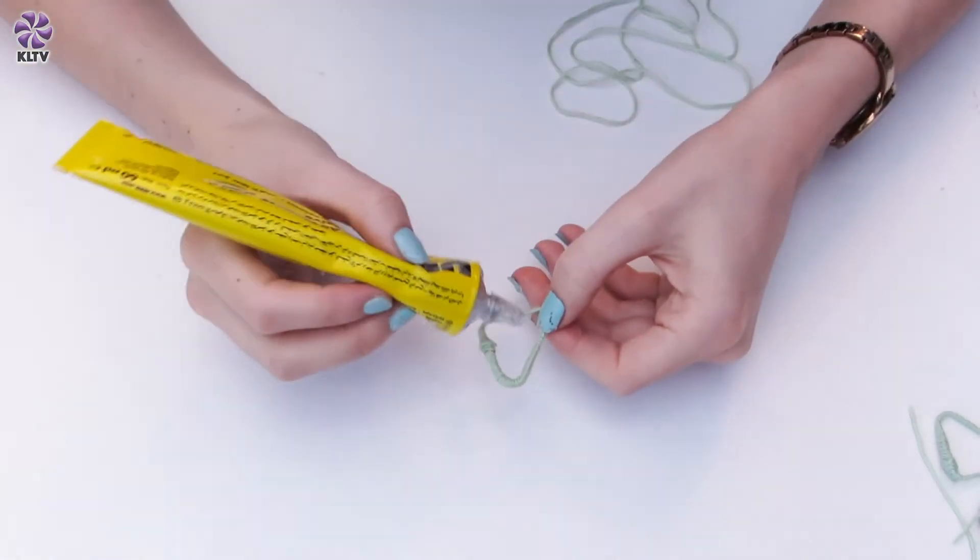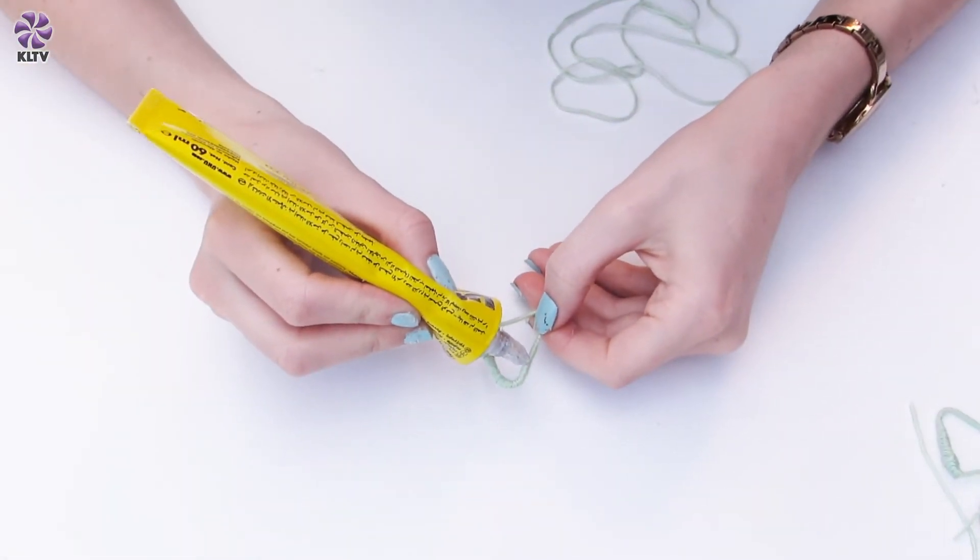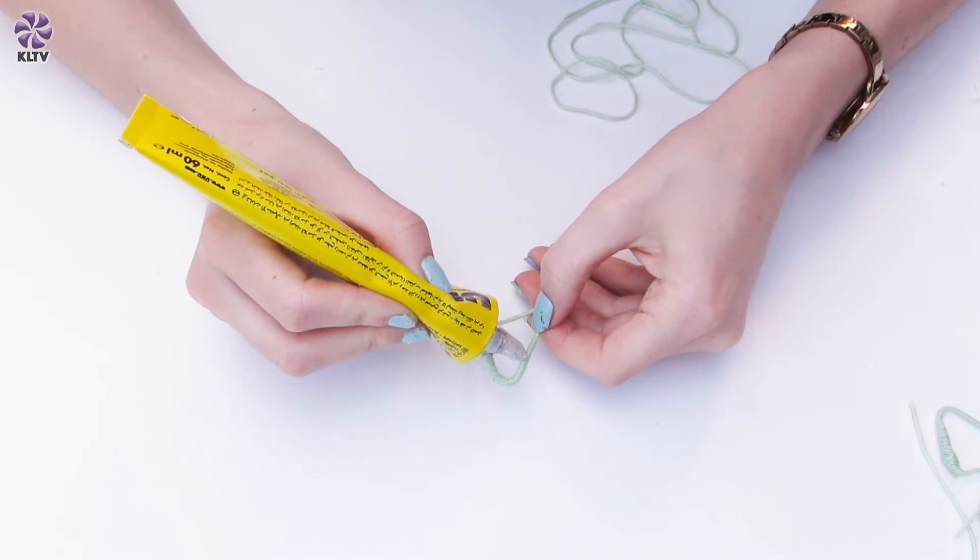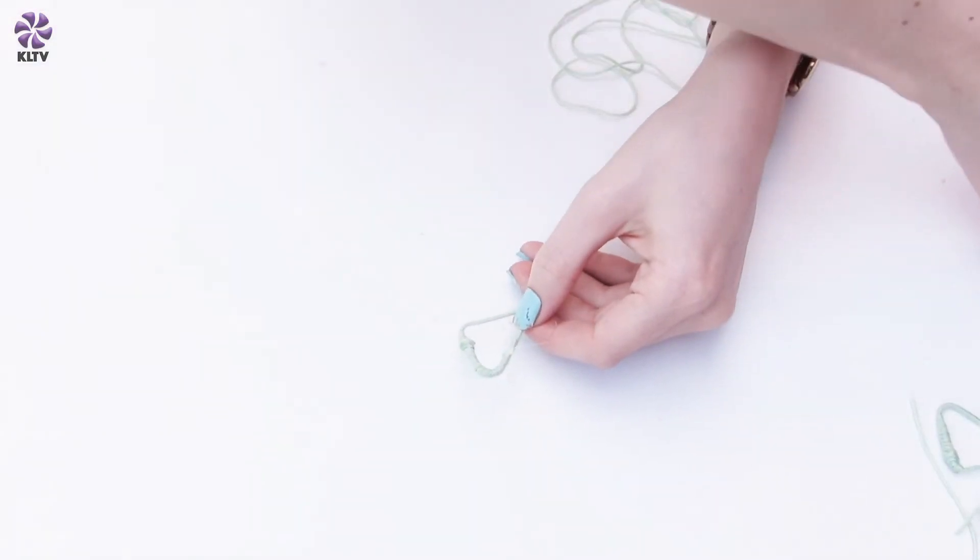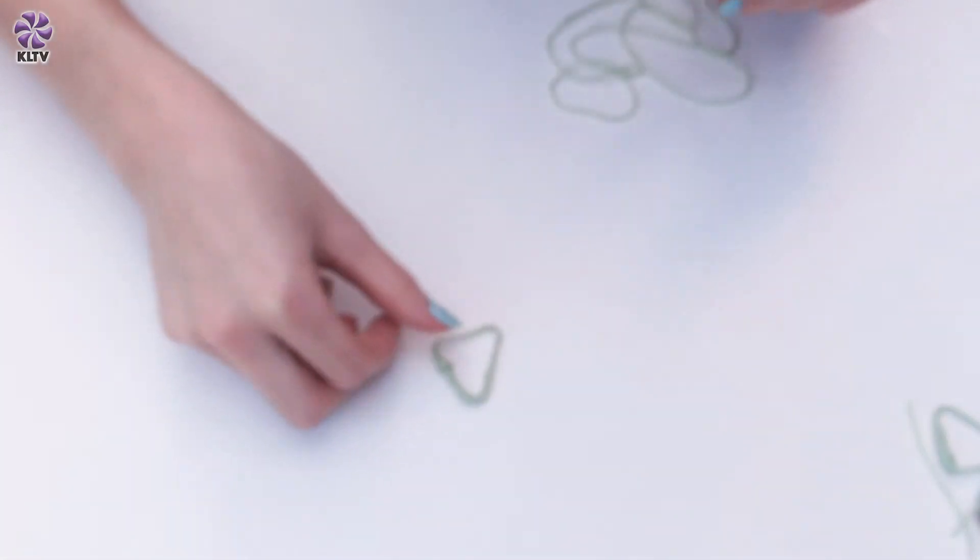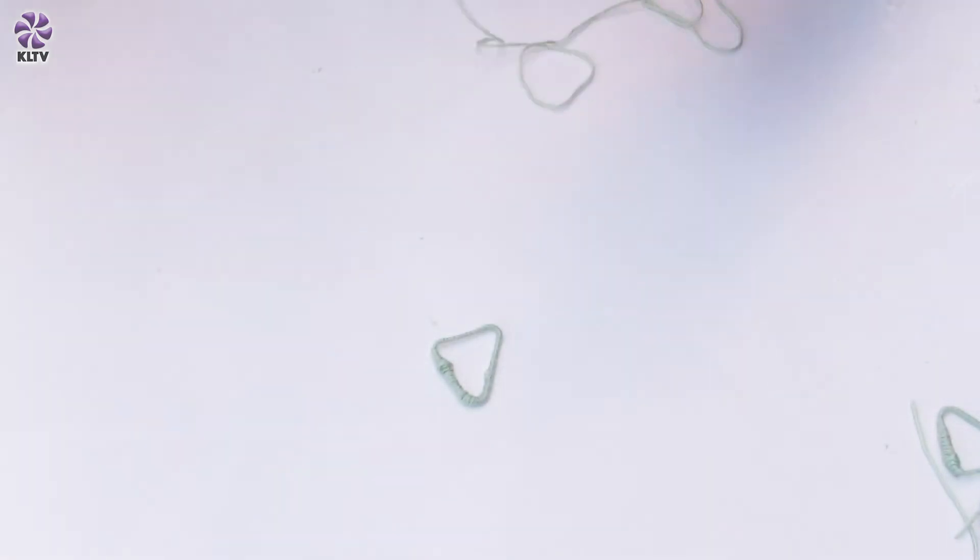So I'm just going to take a small amount of my UHU glue and I'm going to apply this onto the section where I want to add my embroidery thread to start from.